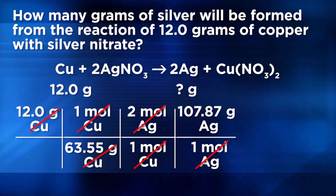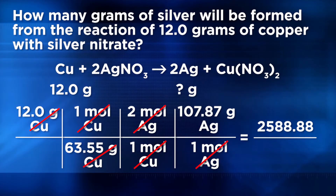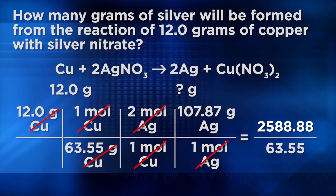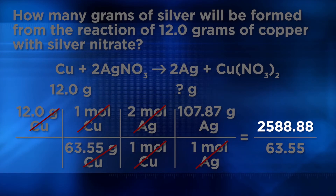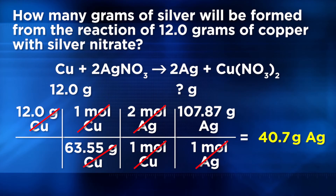All that's left is to multiply all the numbers in the numerator: 12.0 times 1 times 2 times 107.87 equals 2,588.88. Then we divide by the product of 63.55 times 1 times 1, which is 63.55. Dividing 2,588.88 by 63.55 gives 40.7 grams. This is how we know that 40.7 grams of silver are made if 12.0 grams of copper are used according to this reaction.